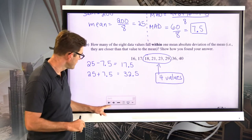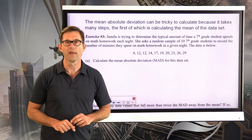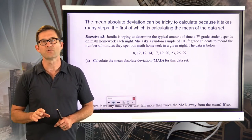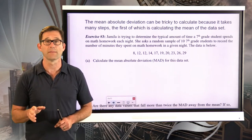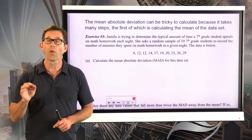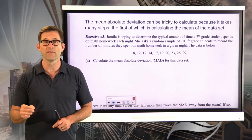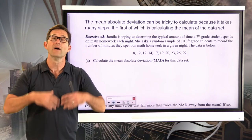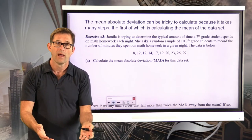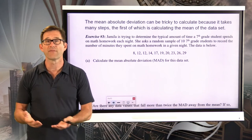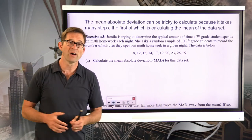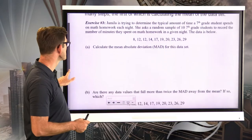The mean absolute deviation can be tricky to calculate because it takes many steps. The first step will always be to calculate the mean of the data set — it's a bit annoying because you have to go through the whole process of calculating the mean, and then once you have the mean you use it to calculate the MAD. Let's take a look at exercise number three.